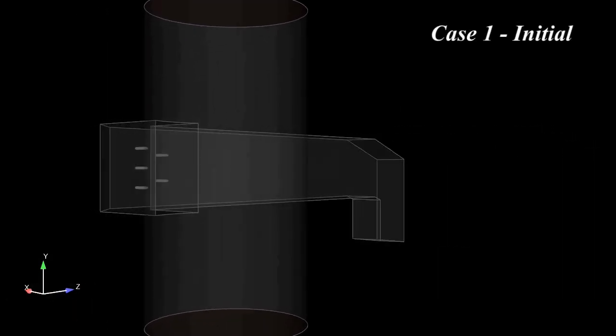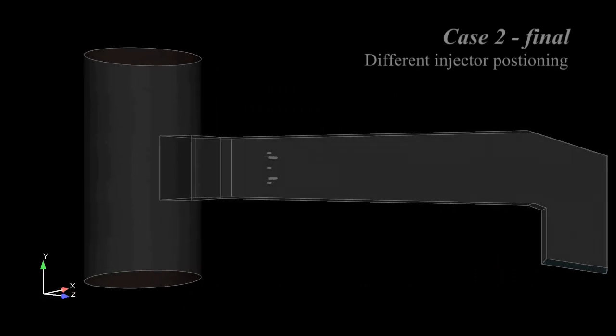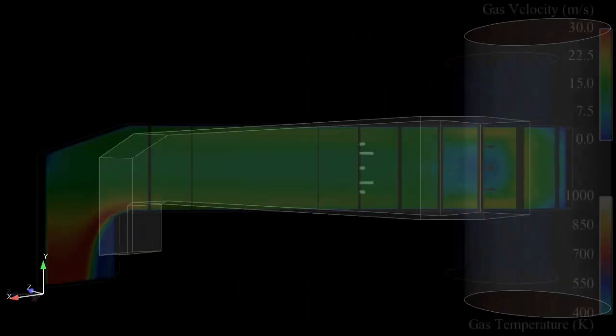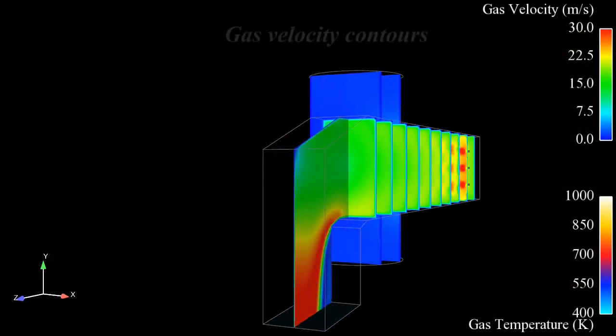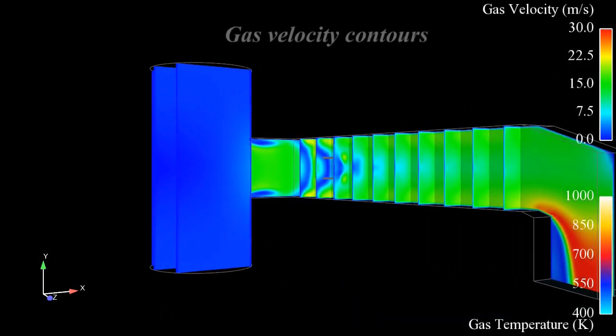The first case indicates that five nozzles are located on one side of the ductwork, while case two indicates that two of the nozzles are moved to the opposite wall, plus a little bit further downstream from the original injection point.